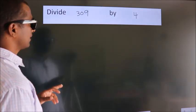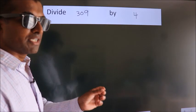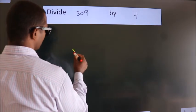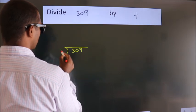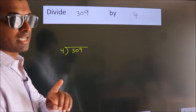Divide 309 by 4. To do this division, we should frame it in this way. 309 here, 4 here. This is your step 1.